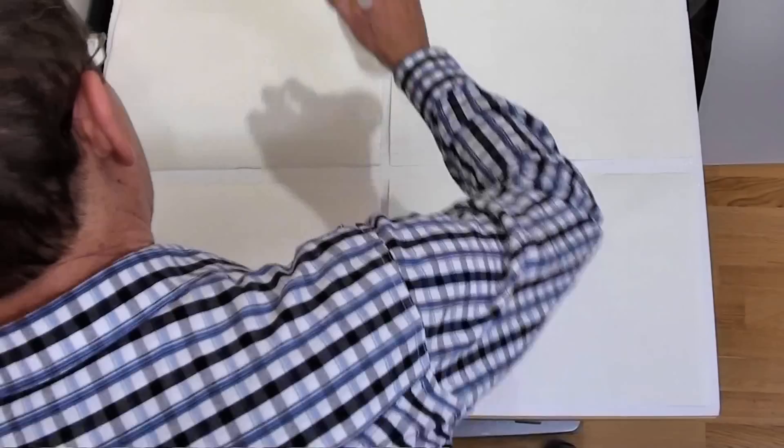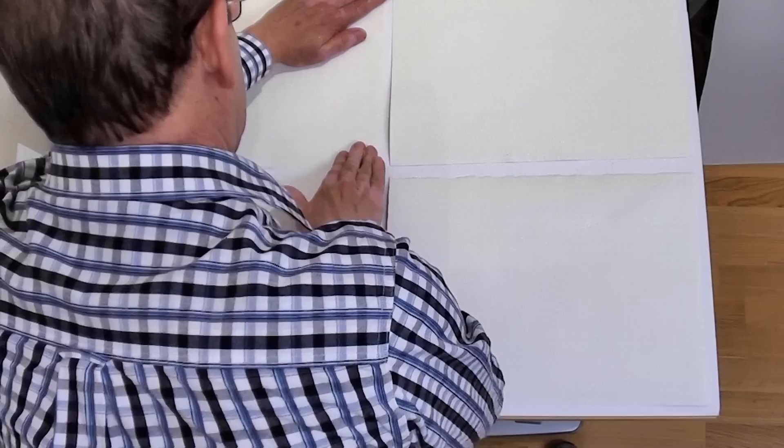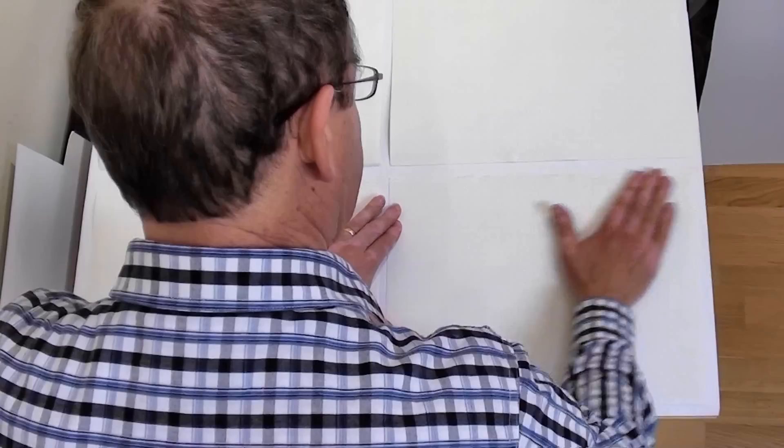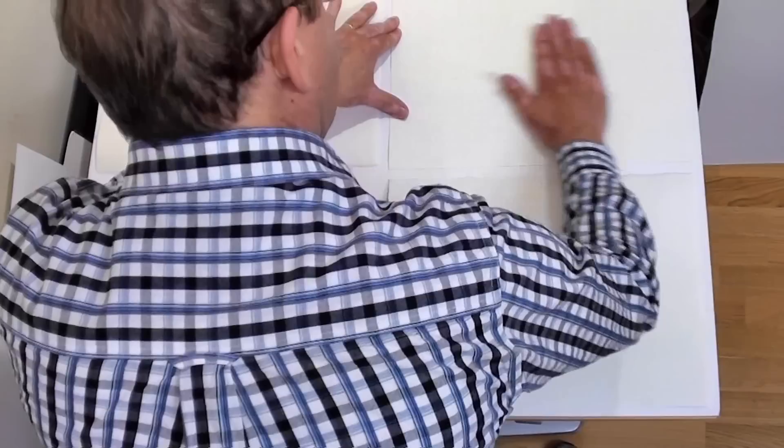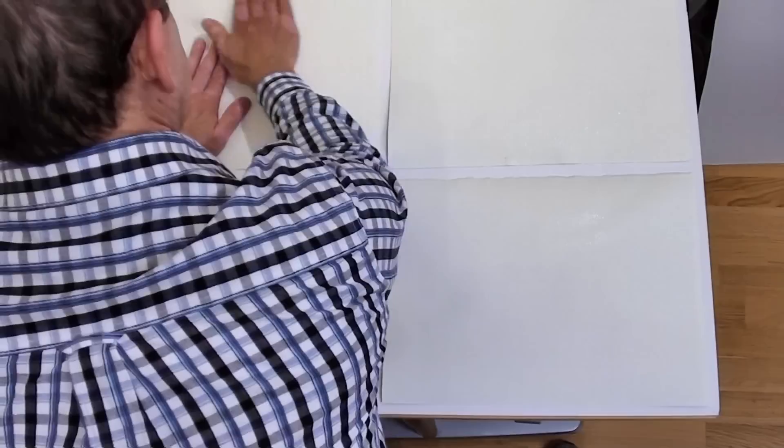I run my hand over it like this just to make sure that it's evenly wet. If you don't wet it enough, I find you have to repeat the process. If there's any dry spots, I'll come back with another spray. There we go, just run my hand over that.